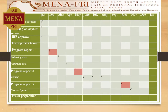The plan was to launch the project and present a plan at the school with IRB approval in January. Progress Report 1 was in February, then collecting data in March, and analyzing data was planned for April.